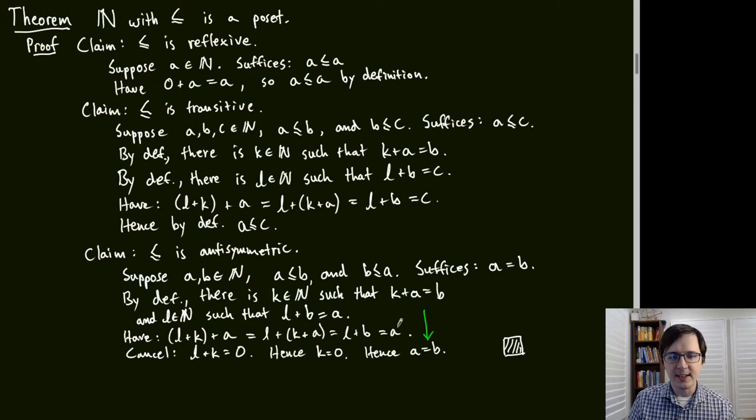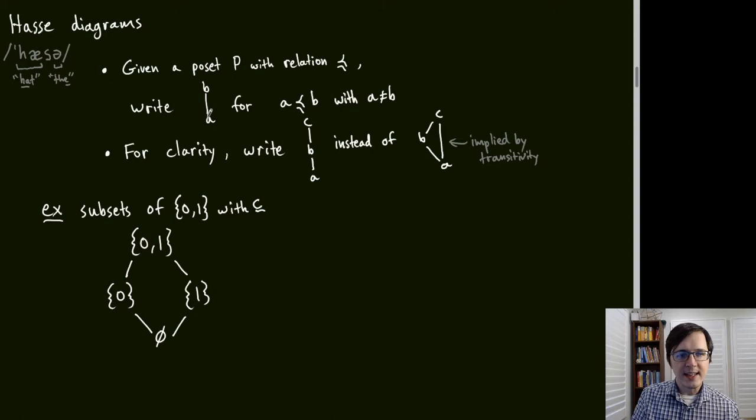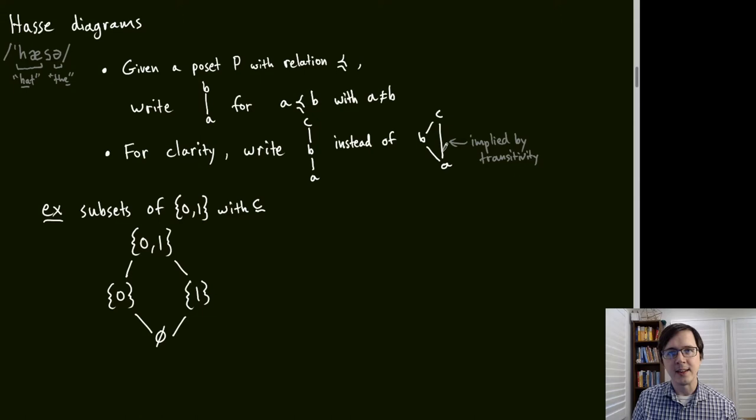One way to visualize a POSET is through a Hasse diagram. Given a POSET, we write A below B with a line between them when A ≠ B and A comes before B in the partial order. We take advantage of transitivity and erase lines that follow for free — if A ≤ B ≤ C, then A ≤ C by transitivity, so we don't need that line.